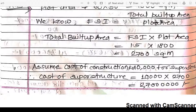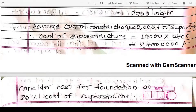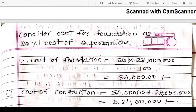Cost of superstructure = 10,000 × 2,700 = rupees 2,70,00,000. Foundation cost is 20% of superstructure = rupees 54,00,000. Always assume 20% for foundation or substructure if not mentioned — this is why a star mark was placed earlier. Total construction cost (superstructure + foundation) = rupees 3,24,00,000.